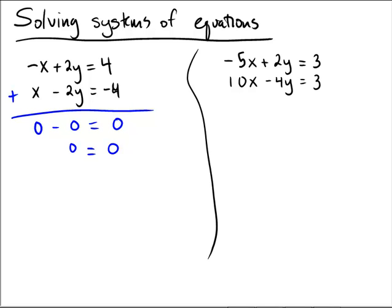Think to yourself, is 0 equals 0 true or false? This is actually true all the time. So what we have here is a system which we refer to as being consistent because there are solutions, but it's consistent dependent because it's actually the exact same line. The two equations are identical if we multiply through by negative 1.